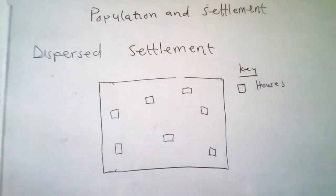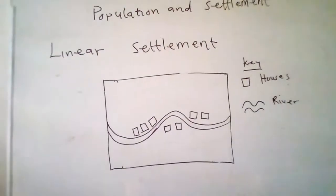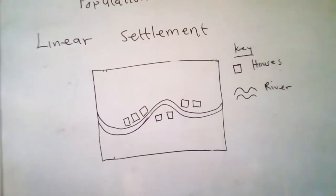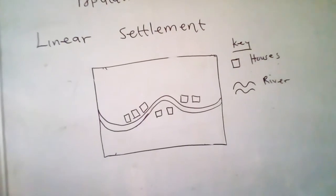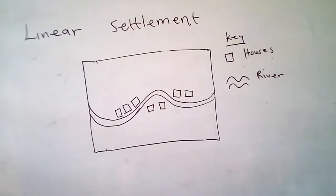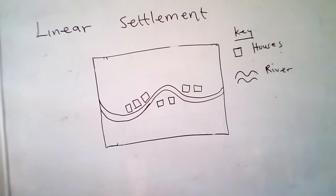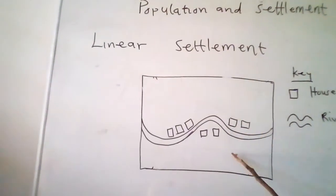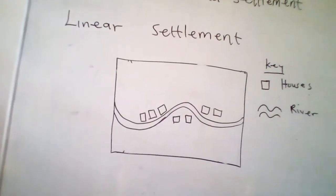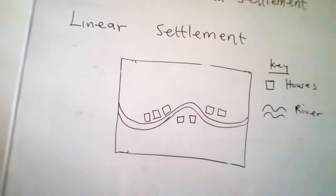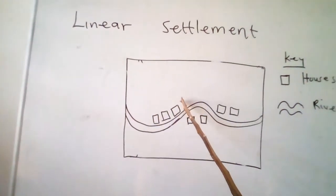The last settlement type is the linear or ribbon settlement. A linear settlement is a type of settlement whereby the houses are built in a line form. The houses are mostly along transport routes such as roads, railways, and rivers. Linear settlement develops faster than the other settlements because of the convenience of proximity with a transport route.